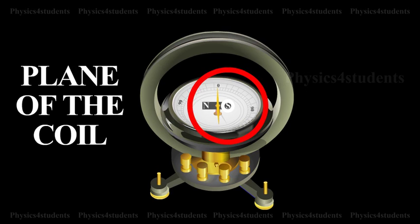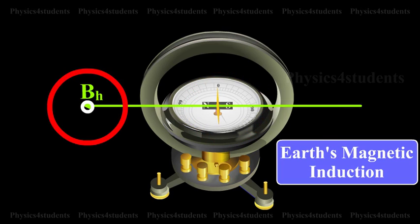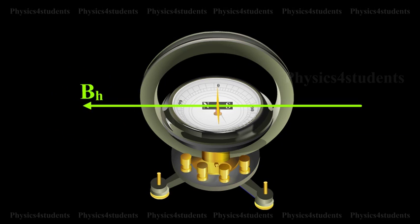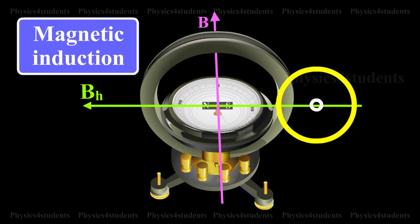Theory. When the plane of a coil is placed parallel to the horizontal component of Earth's magnetic induction BH and a current is passed through the coil, there will be two magnetic fields acting perpendicular to each other. The magnetic induction B due to the current in the coil acting normal to the plane of the coil and the horizontal component of Earth's magnetic induction BH.